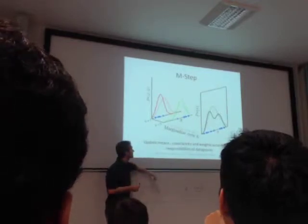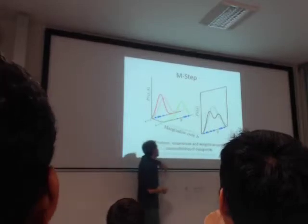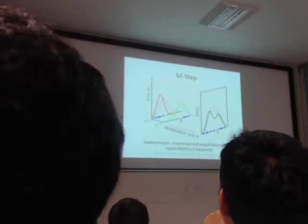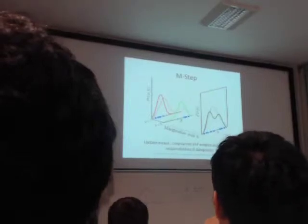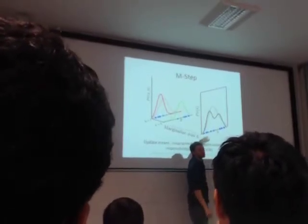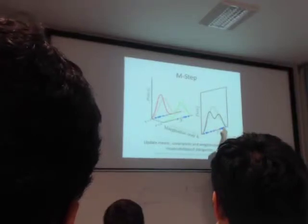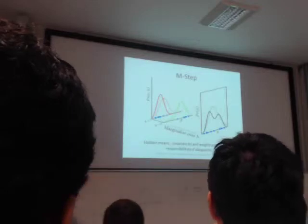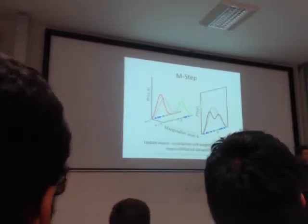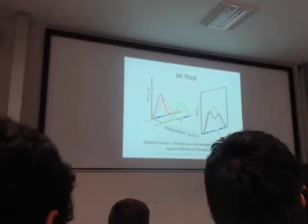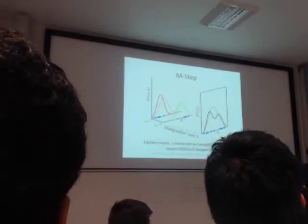What would happen if I initialized one of the Gaussians to be very small variance, centered close to one of the points, kind of on its own? And the other Gaussian I initialized to be sort of big and broad, on the right side? One problem discovered with code was that one Gaussian was just taking responsibility for one data point, and the other Gaussian was taking responsibility for all others. And then the single Gaussian that just takes one data point — the variance gets zero, and that's not good.